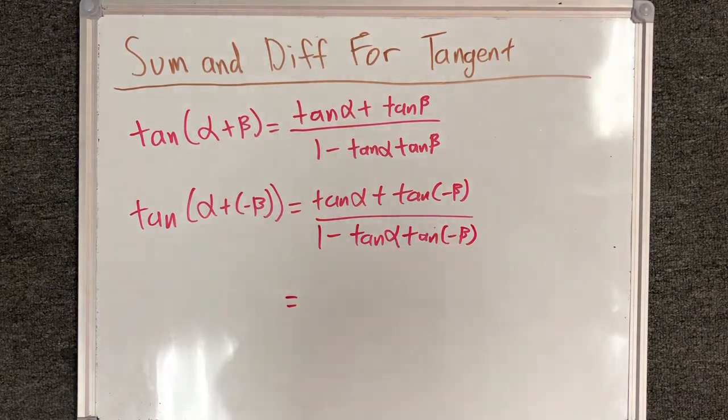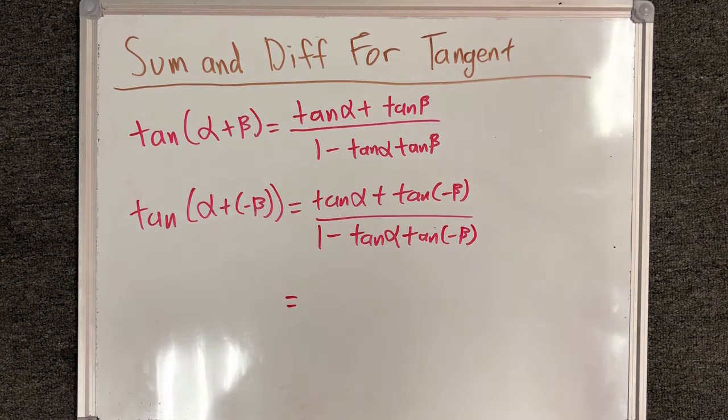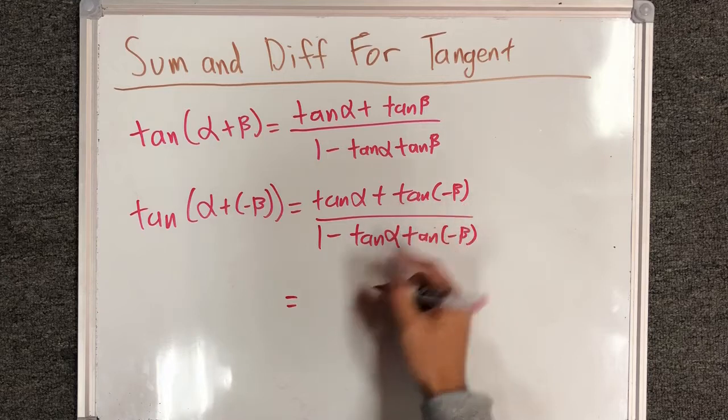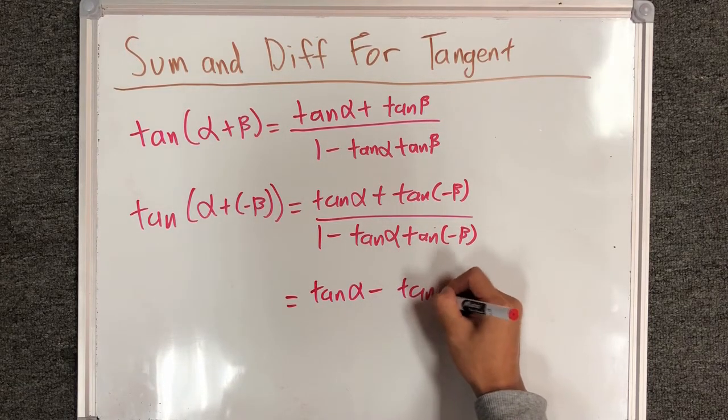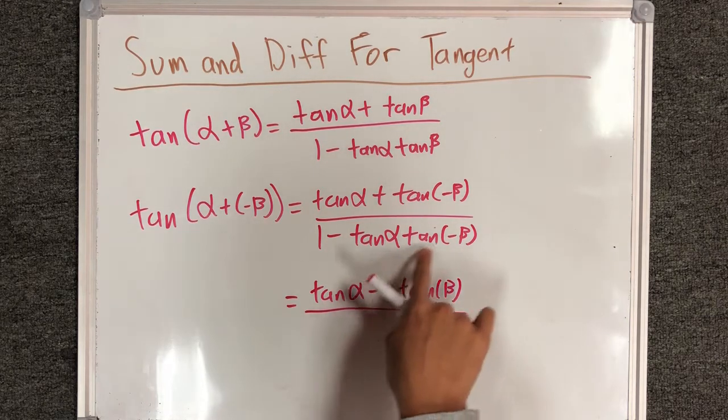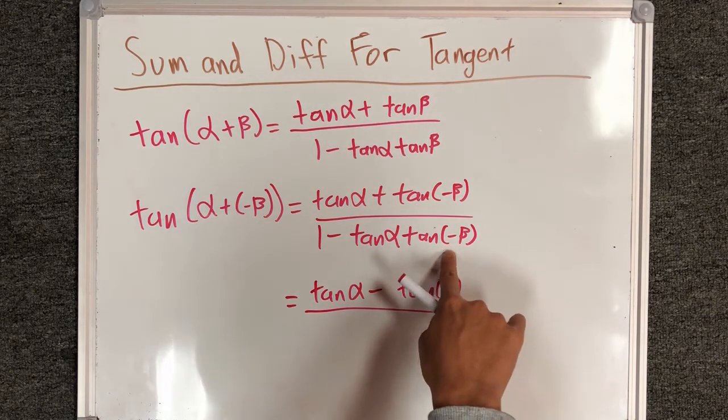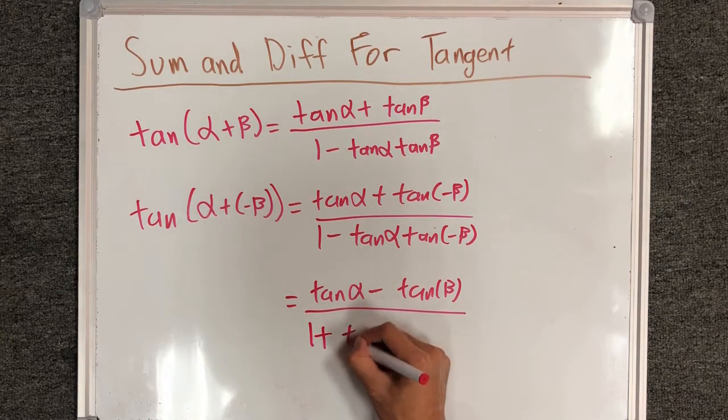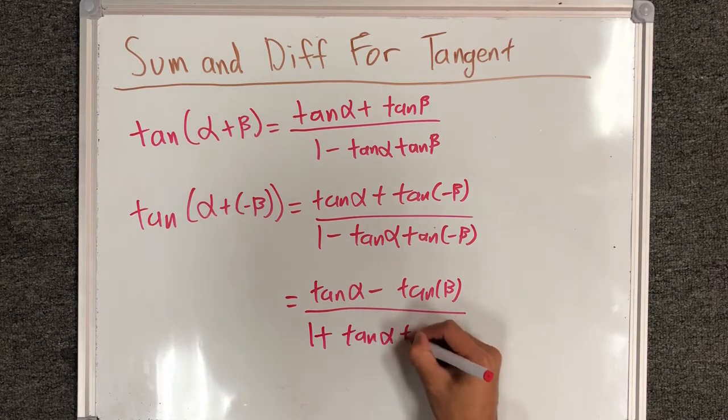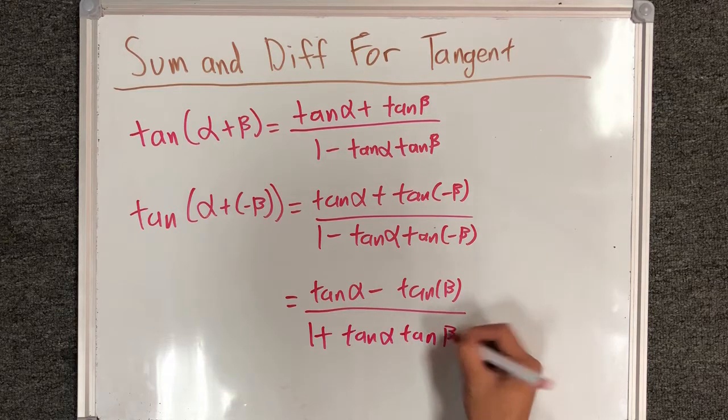We know that tangent of negative beta is negative tangent beta because tangent is an odd function. So tangent negative beta will turn into tangent alpha minus tangent beta, and this negative tangent beta will combine with the negative over here to form 1 plus tangent alpha tangent beta.